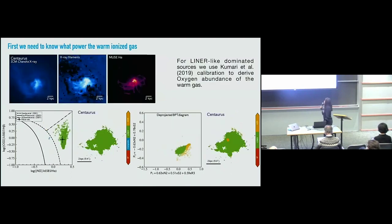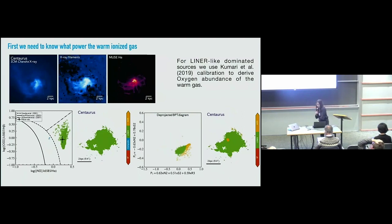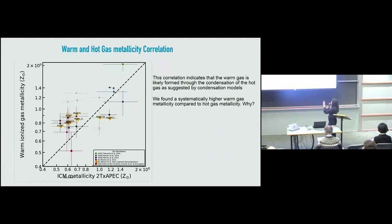In sources where star formation is very low, emission is dominated by other line emissions and we use different calibrations. There are significant systematics, but putting everything together, we see very beautiful correlations between the metallicity of the warm gas and the metallicity of the intercluster medium. Please come see my poster.